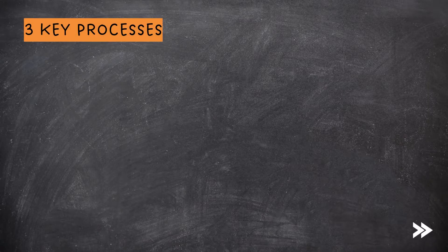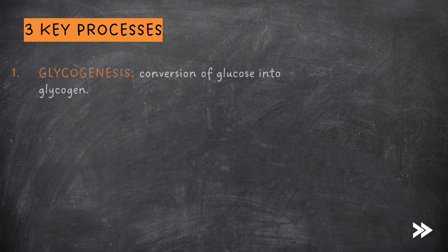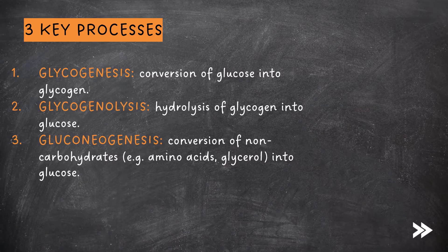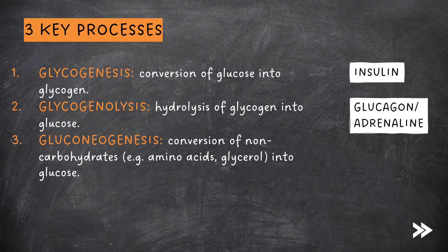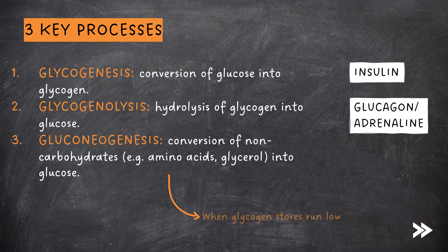There are three key processes involved in the control of blood glucose concentration. Glycogenesis is when glucose is converted into glycogen and is controlled by the hormone insulin. Glycogenolysis, i.e. the splitting of glycogen, is when glycogen is hydrolyzed into glucose, and is controlled by the hormones glucagon and adrenaline. Gluconeogenesis is when non-carbohydrates such as amino acids and glycerol are converted into glucose, and is useful when glycogen stores run low and glycogenolysis cannot take place.